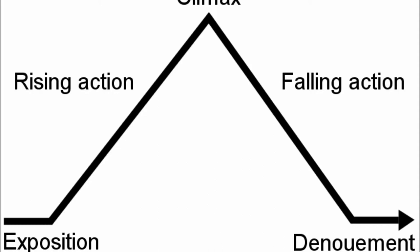The exposition is the beginning part of the story. It often includes the setting, which is the time and place, and the major characters. The rising action are events that occur throughout the story, and through each rising action, the tension continues to build, till we get to the top of the pyramid, which is the climax.